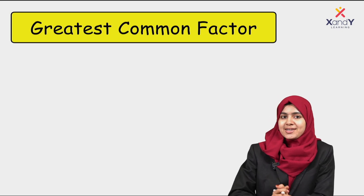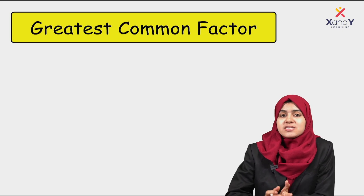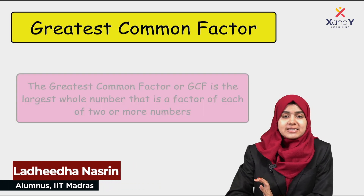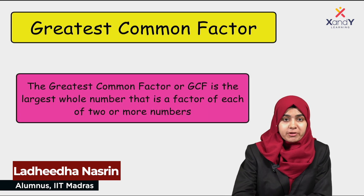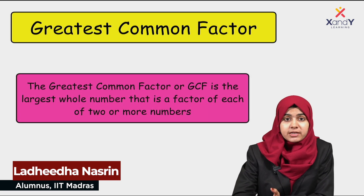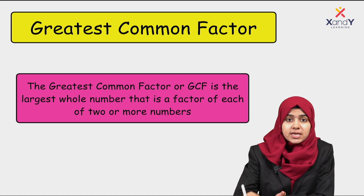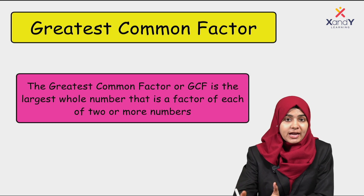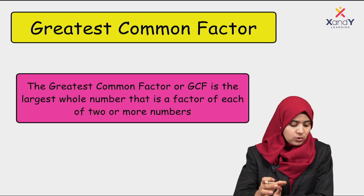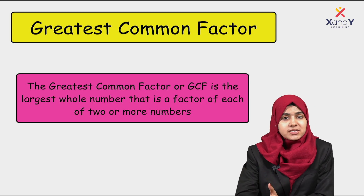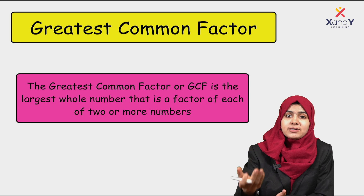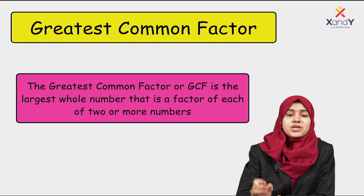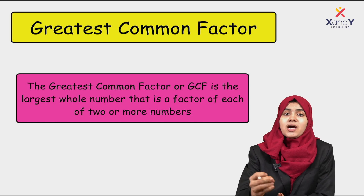Hello everyone. In this class we learn the greatest common factor and the highest common factor. The greatest common factor, or GCF, and the highest common factor, HCF, is the largest whole number that is a factor of each of two or more numbers. So we consider two numbers — those two numbers share the highest and largest factor in the highest common factor.